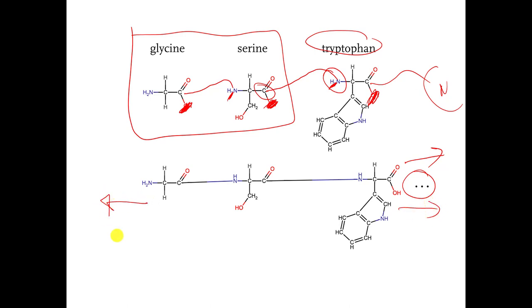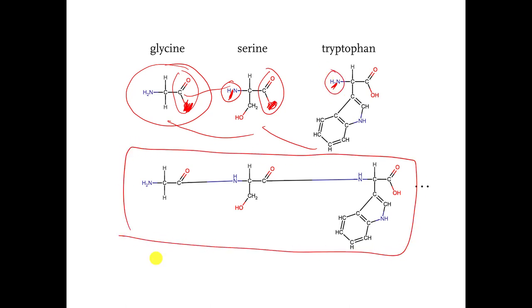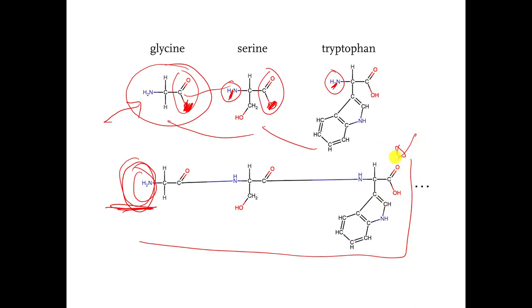When I connected the glycine to the serine to the tryptophan, this used to be a carboxylic acid functional group, but I destroyed it because I ripped out the OH. This used to be an amine, but I also destroyed it when I connected the carbon to the nitrogen. Now look at the molecule that we made: is there any place where an amine functional group did not get destroyed? Over here on the left side, that's the only place where an amine functional group did not get destroyed. Over here on the other side, this is the only place where the carboxylic acid didn't get destroyed because we stopped at three.